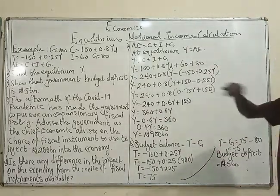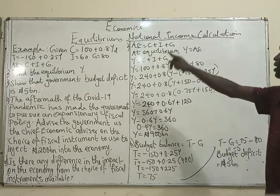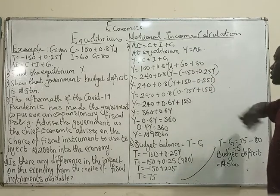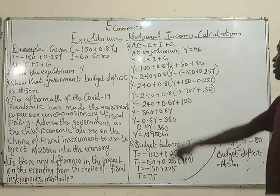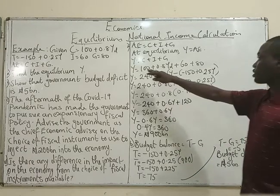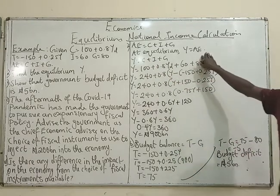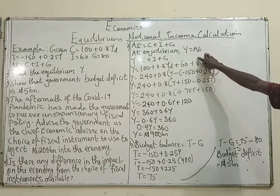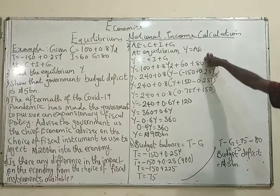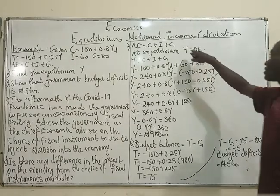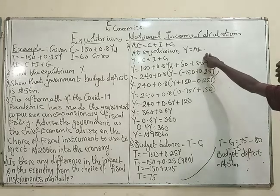So to answer the first question, what is the equilibrium Y? Recall that I mentioned in the previous class that it's only at equilibrium that Y equals AE — that national income equals aggregate expenditure, or that potential real GDP equals actual real GDP.